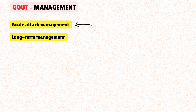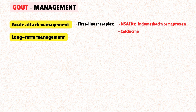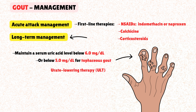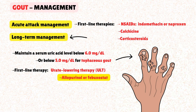Treatment has two distinct phases: managing the acute attack and providing long-term prophylaxis. For an acute attack, the goal is to reduce inflammation and pain. First-line therapies are NSAIDs like indomethacin or naproxen, colchicine — which inhibits neutrophil chemotaxis and activation — and corticosteroids, either orally or via intra-articular injection. For long-term management, the goal is to achieve and maintain a serum uric acid level below 6.0 mg/dL, or below 5.0 mg/dL for tophaceous gout, using urate-lowering therapy. First-line agents are xanthine oxidase inhibitors like allopurinol or febuxostat. Uricosuric agents like probenecid can be used as an alternative to increase renal excretion of uric acid. Importantly, urate-lowering therapy should not be initiated during an acute attack, as rapid fluctuations in uric acid levels can worsen the inflammation.